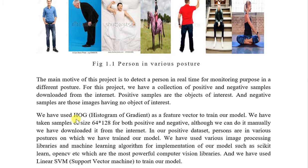We have used HOG — that is, Histogram of Oriented Gradients — as a feature vector to train our model. We have taken samples of size 64×128 for both positive and negative. In our positive dataset, persons are in various postures on which we have trained our model.